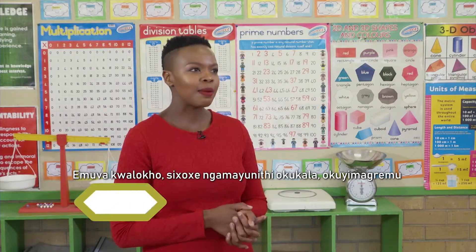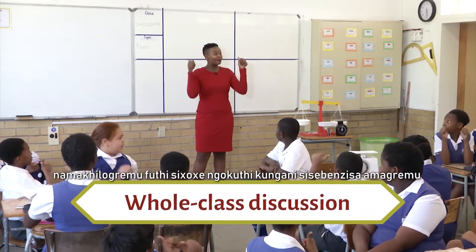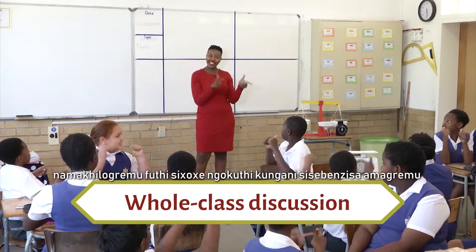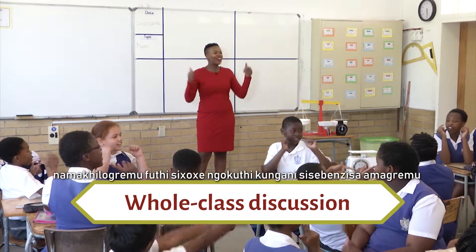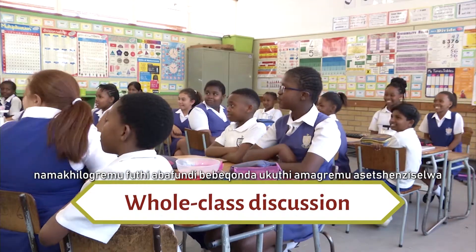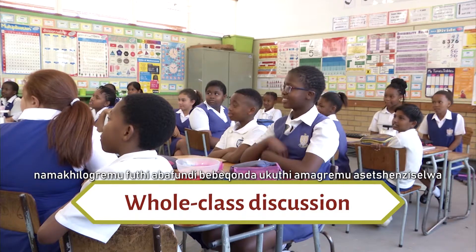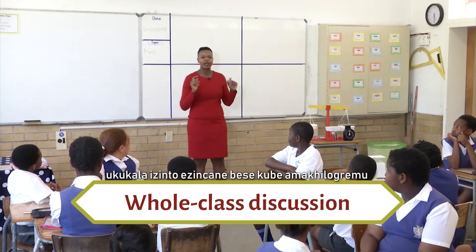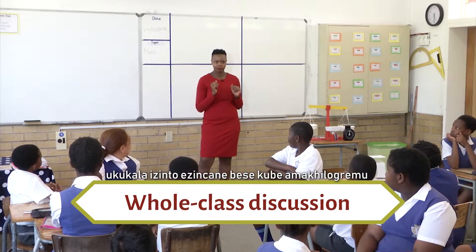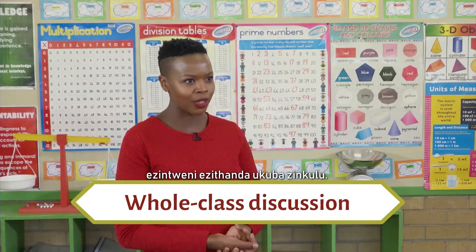After that, we discussed the different units of measurement — grams and kilograms — and we discussed why we use grams and kilograms. The learners understood that grams are used to measure smaller objects and kilograms, slightly larger objects.